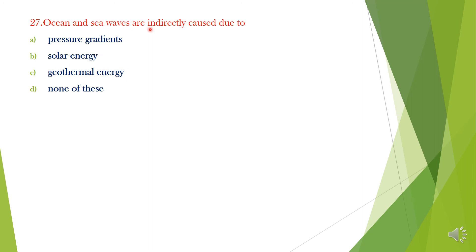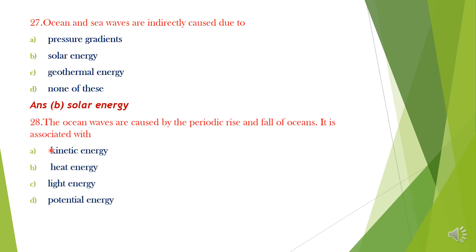Question 27. Ocean and sea waves are indirectly caused due to: A. Pressure gradients, B. Solar energy, C. Geothermal energy, D. None of this. Answer option B, Solar energy.